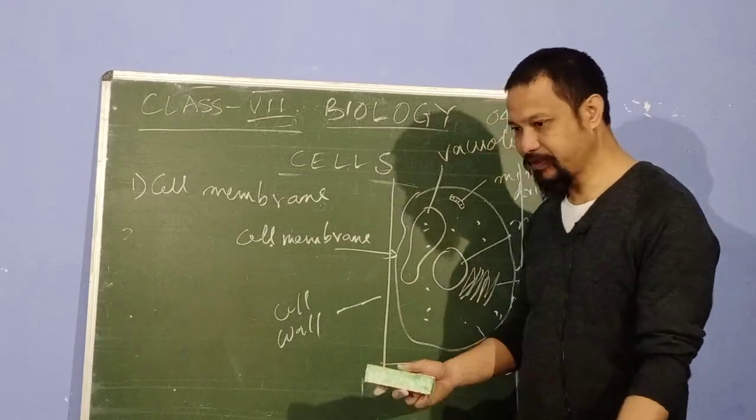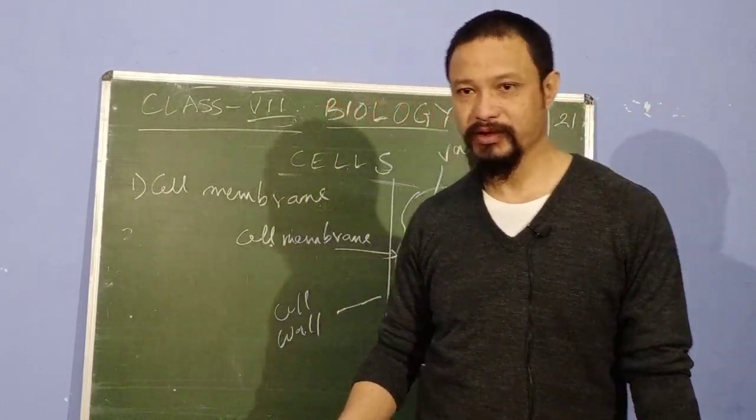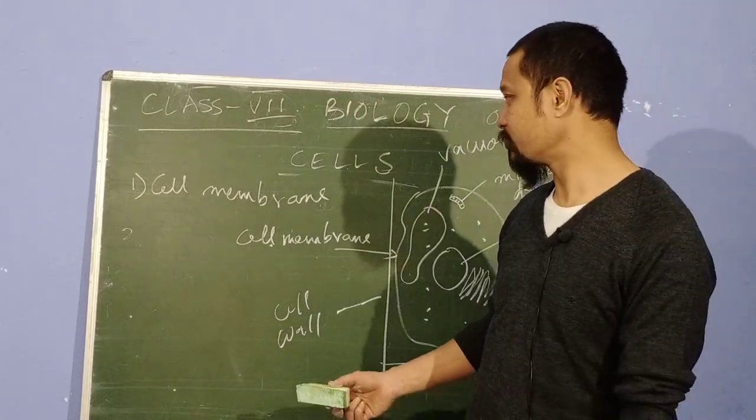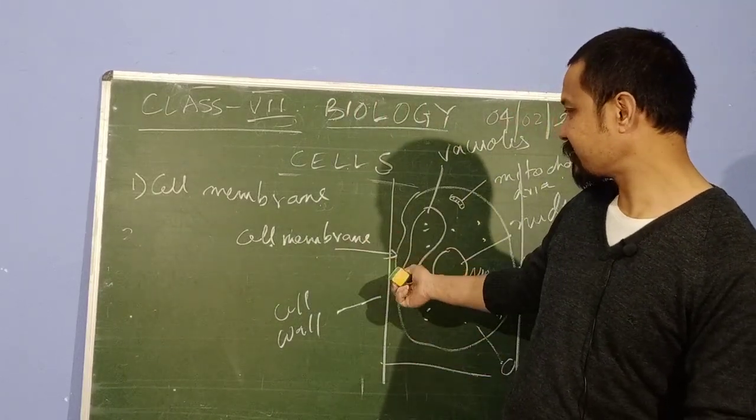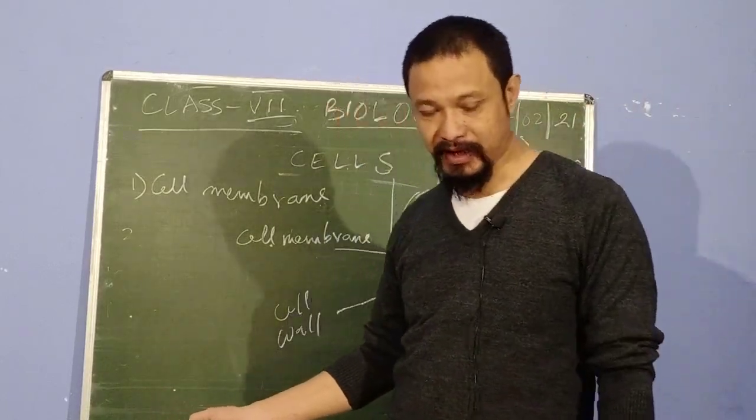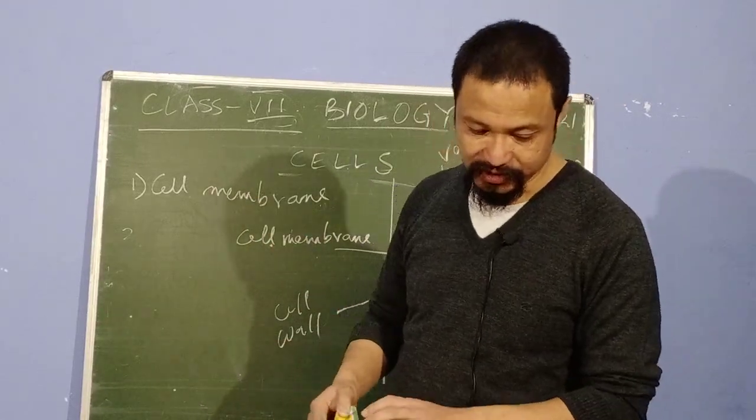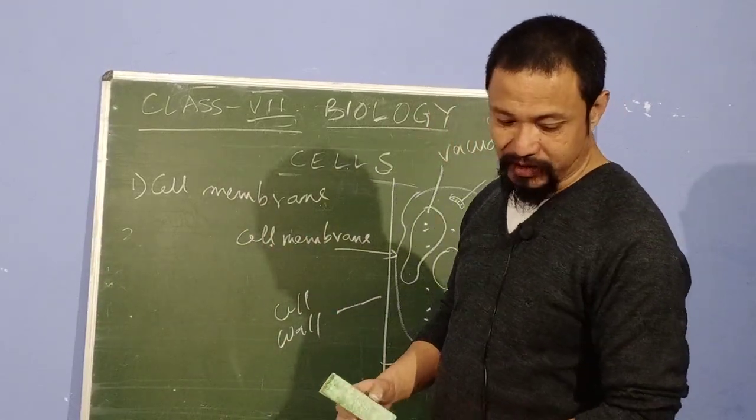This is also permeable only, not selectively permeable. It's pretty much permeable because since it's already dead, things can go inside and go out. But the most important structure besides that is cell membrane. In fact, it is one of the basic differences between a plant cell and an animal cell. Animal cell doesn't have a cell wall. Plant cell has a cell wall.